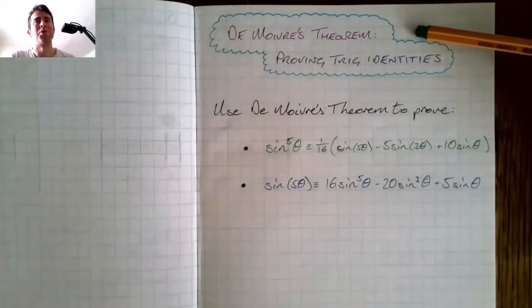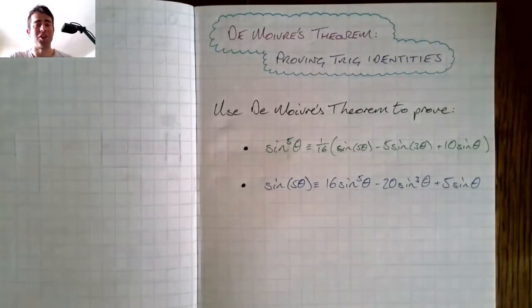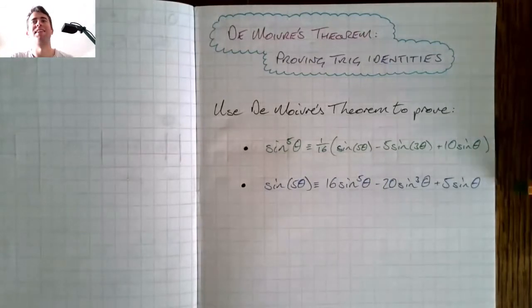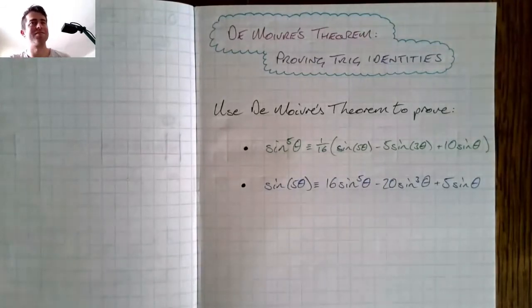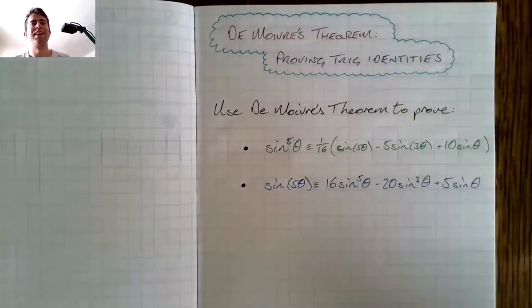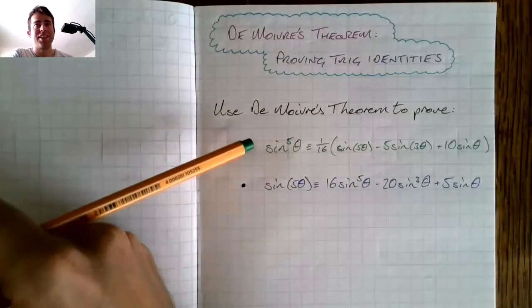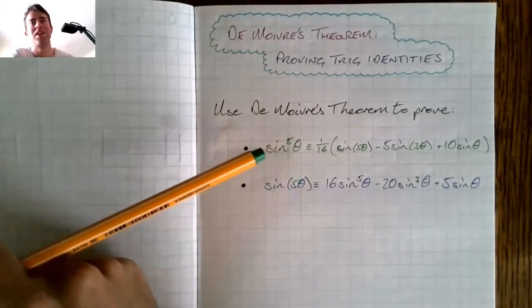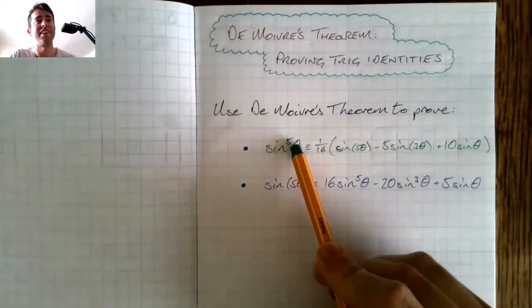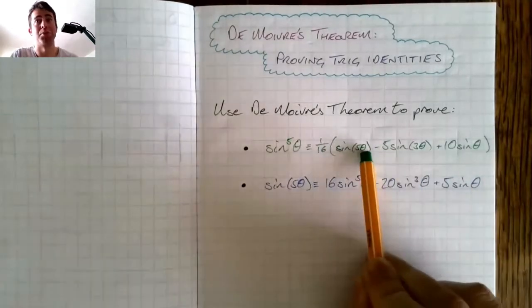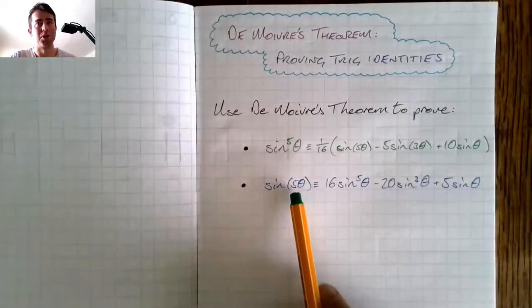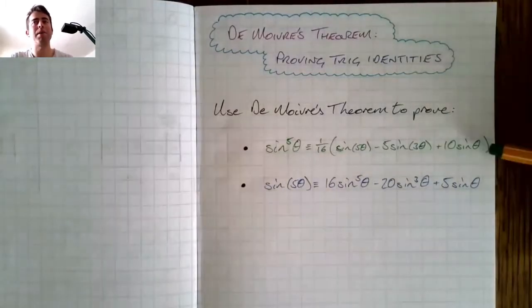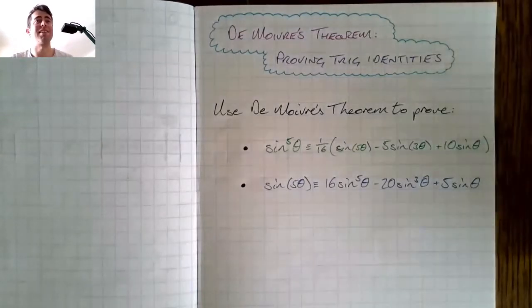If you've been practicing using De Moivre's Theorem to prove trig identities, then you will have come across identities like these. Just take a moment to try to figure out why I've chosen these two in particular to show you. If you've come across these, you will see that they're going different ways. In the first one, the green one, we've got a power of sine, and then the sines in here have the multiples of theta in them. And the second one has the multiple of theta here, and the power of sines in here. And the way we approach these two identities is slightly different.